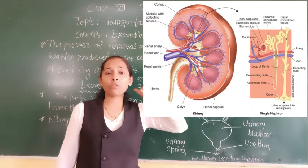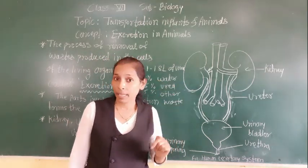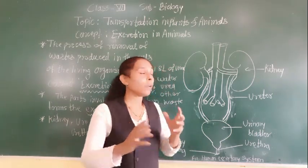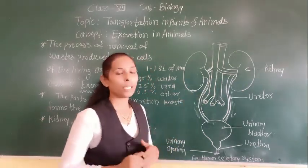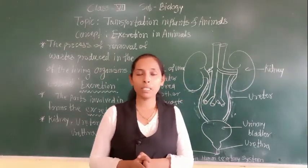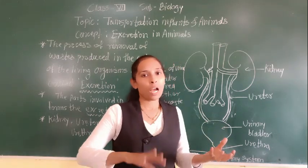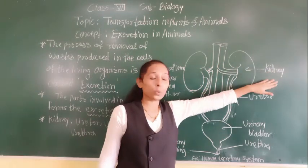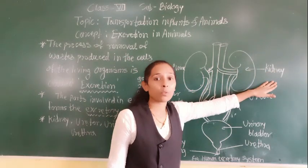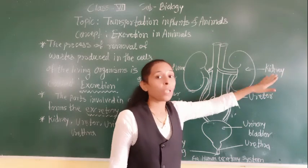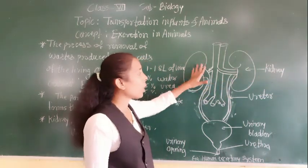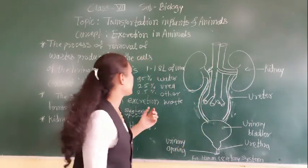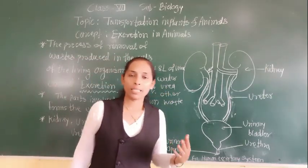The kidney contains a large number of coiled tubes called nephrons, and these nephrons act like a filter. When blood comes into the kidney, it contains both useful and harmful substances. The useful substances get absorbed back into the blood, and nephrons help to remove all the harmful materials — such as urea and waste salts — from the blood.